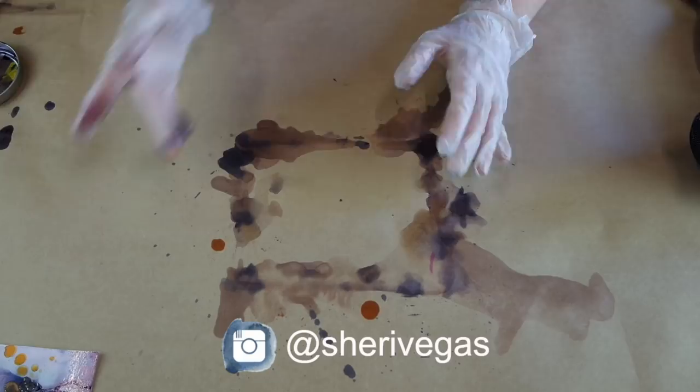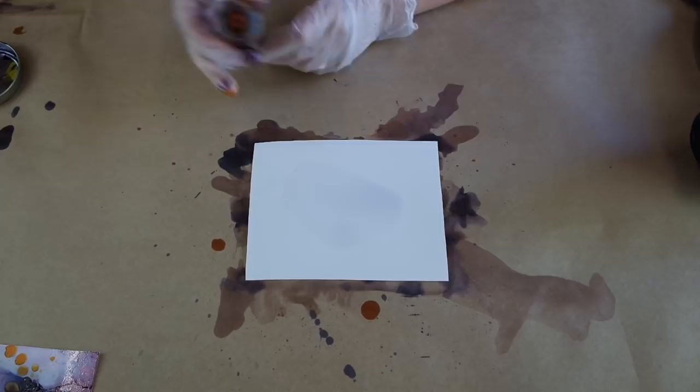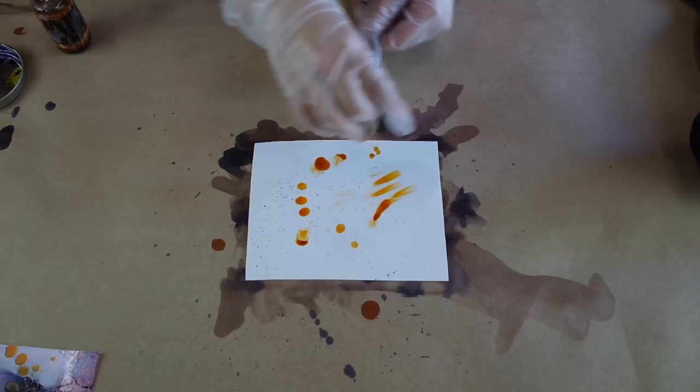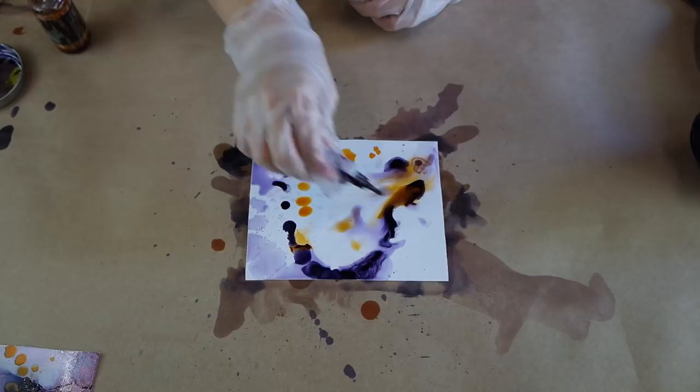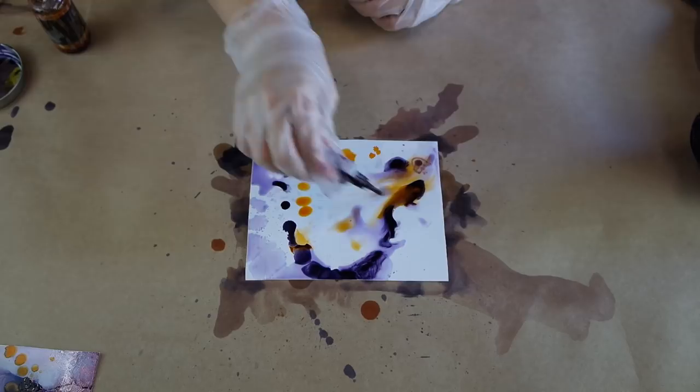For the last effect I'm going to show you, I place some alcohol down and then I place all the colors that I'm going to use on top. You can use whatever colors you like and place them wherever you like, and then I start to blow and shape them all together. As you can see, these are the four different effects you can create with your alcohol inks.